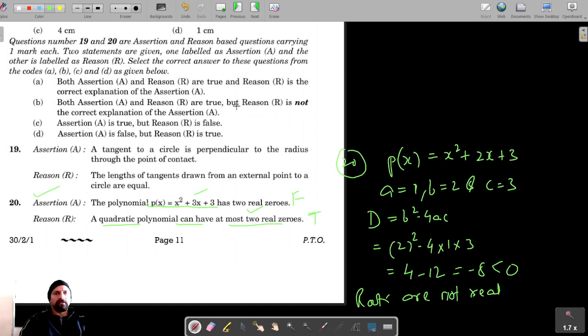So in this case, assertion is false but reason is true, so option C is the correct answer. Let's move on to question number 21.